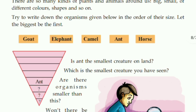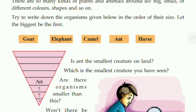Try to write down the organisms given below in the order of their size. Let the biggest be first. The organisms are: goat, elephant, camel, ant, and horse. Which one is the biggest animal and what is the last one? The answer is in descending order.